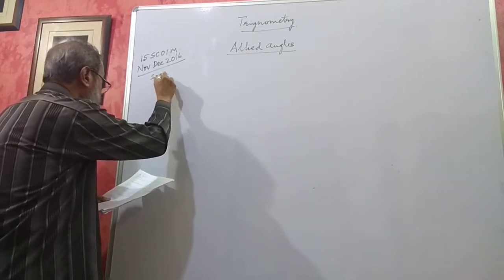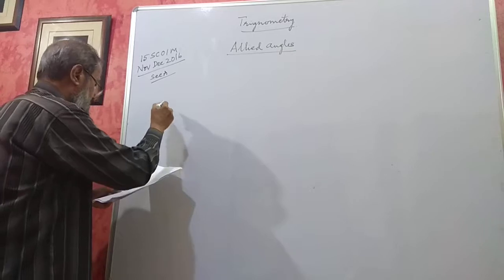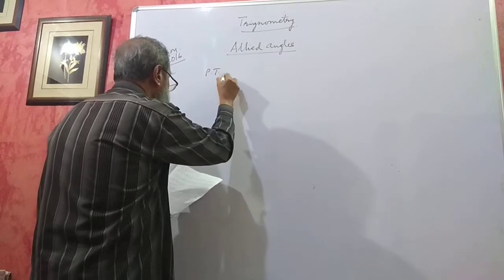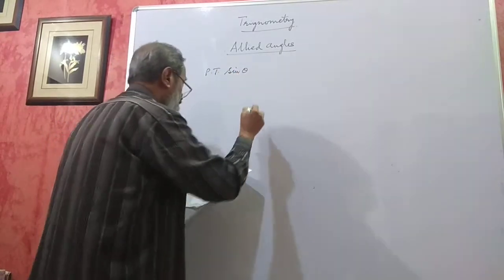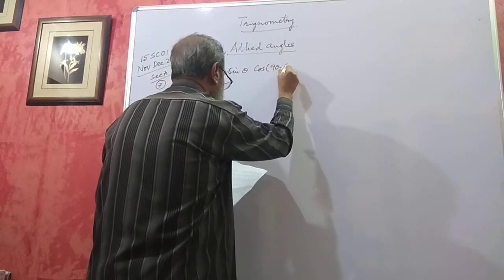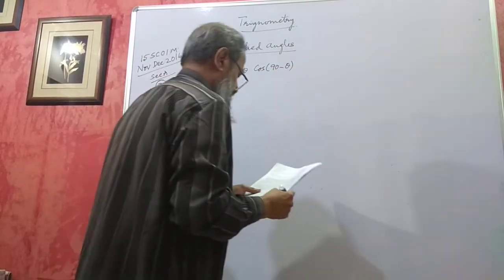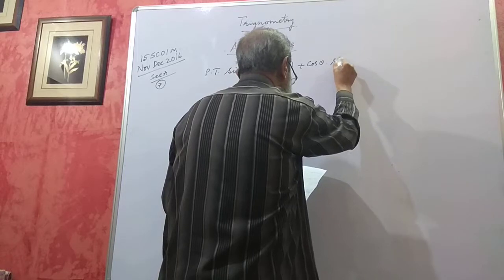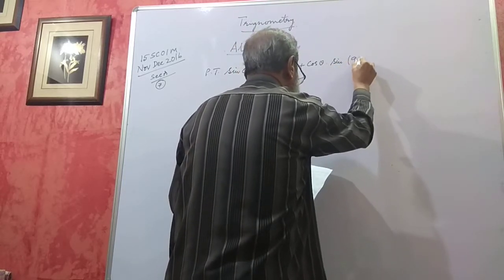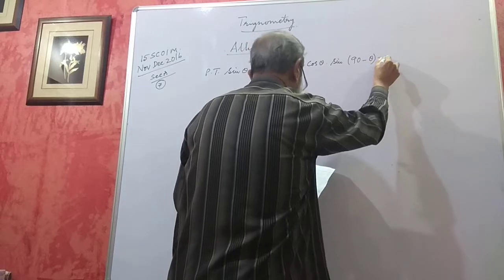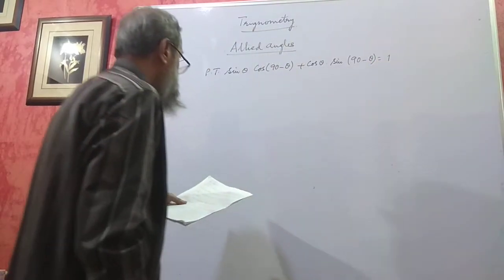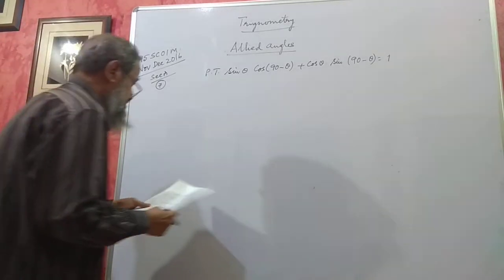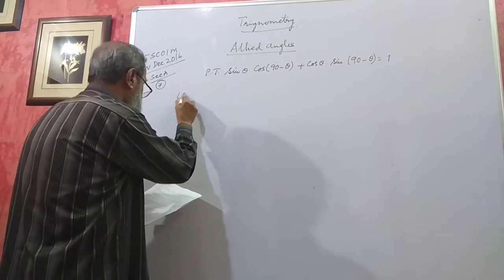From this paper, Section A, I am taking problem number 7, three marks. Let's prove that sin θ · cos(90° − θ) + cos θ · sin(90° − θ) = 1. Now, taking the left side as usual.